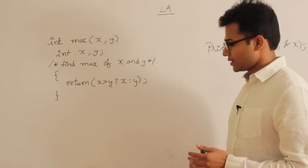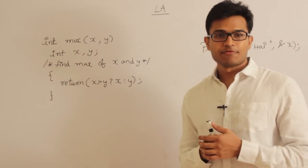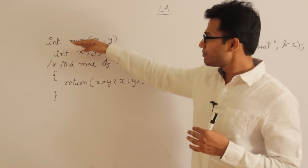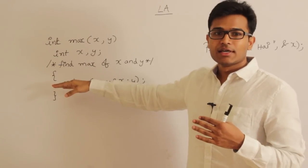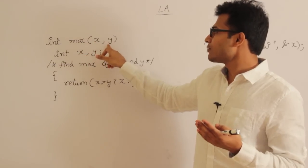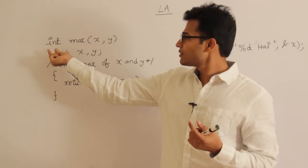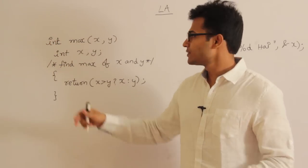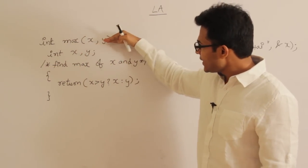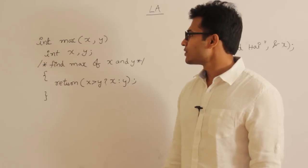Let's talk about the lexical analyzer first. The main responsibility of the lexical analyzer is that it is the only phase which actually reads the text character by character. Once this phase is over, you will never see the letters i-n-t or m-a-x. Instead, every lexeme is converted into a token — for example, int is a token, max is a token, identifier x is a token.